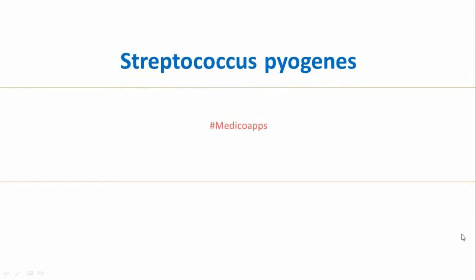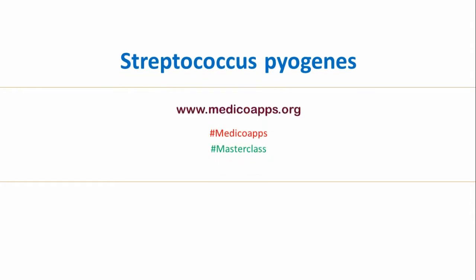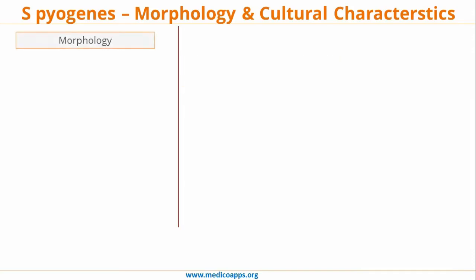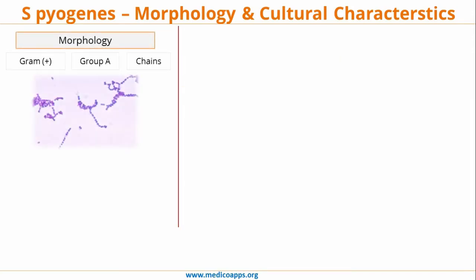In today's medical apps masterclass we will learn and review Streptococcus pyogenes. Let's start with the morphology. Strep pyogenes is a gram-positive cocci found in chains and belongs to Group A according to Lancefield classification.